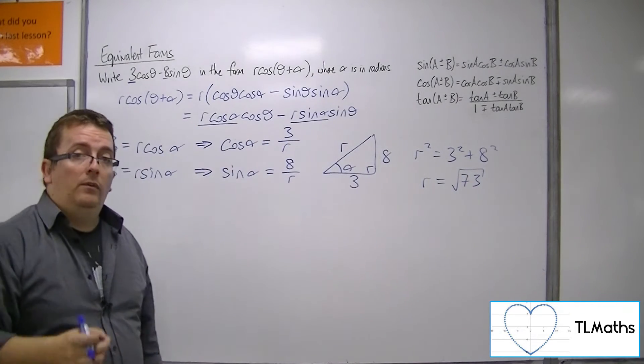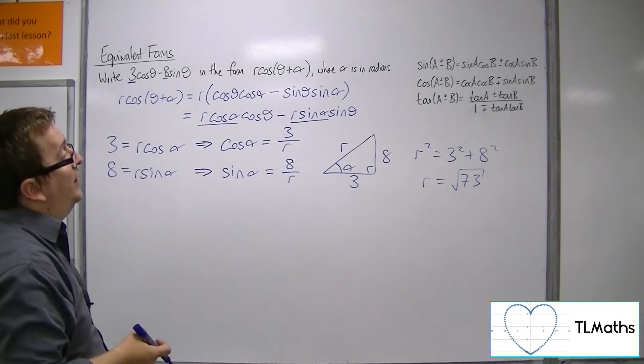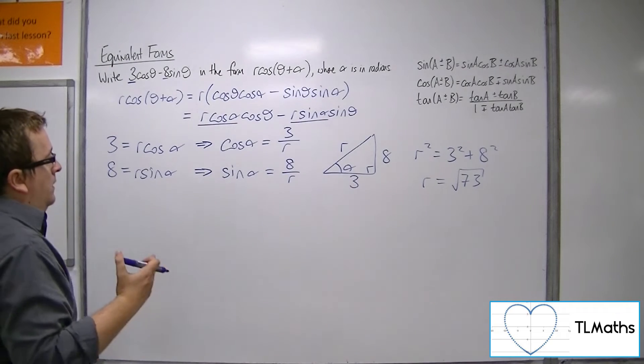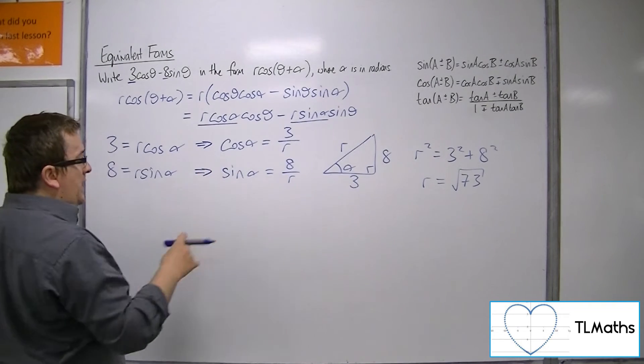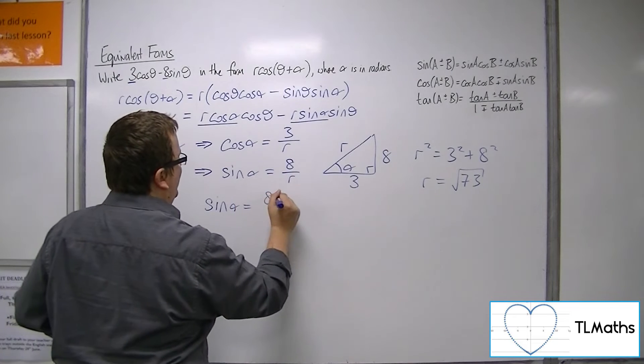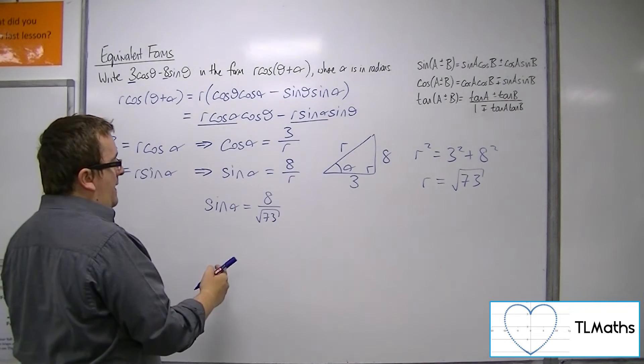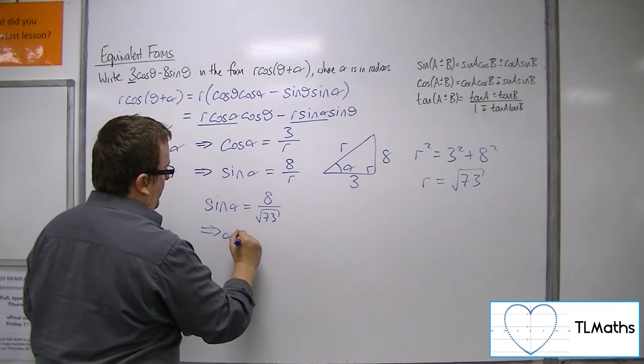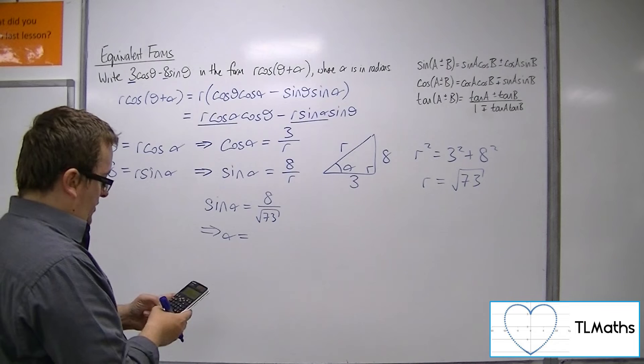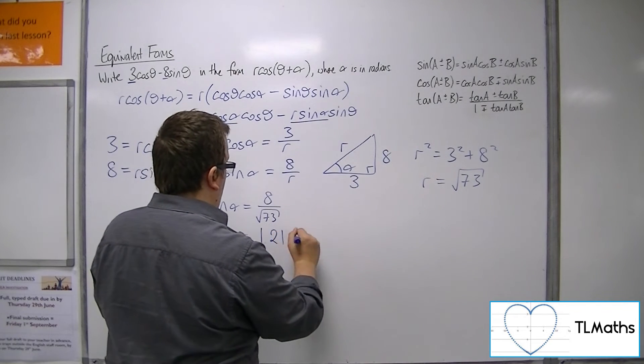Now, r is always positive here, so don't think about bringing in a plus minus at this point, because r is a length. So, given that we've got r, we can now say that sin alpha is 8 over root 73, using that, substituting into that formula there. And so alpha is inverse sine of 8 over root 73, and that's 1.21 to 3 significant figures.